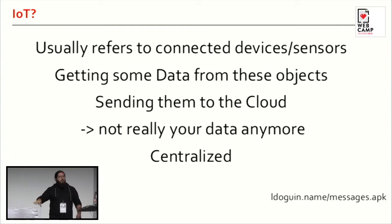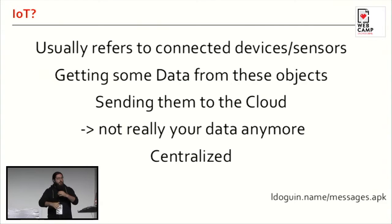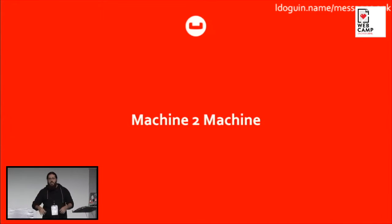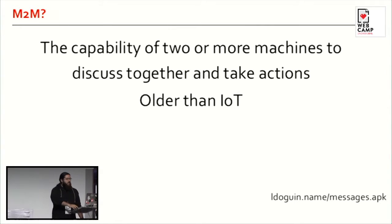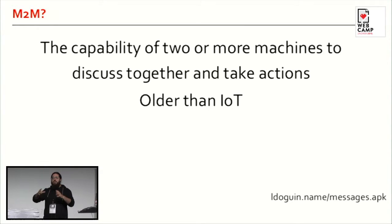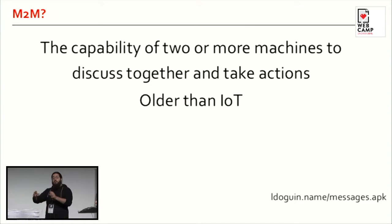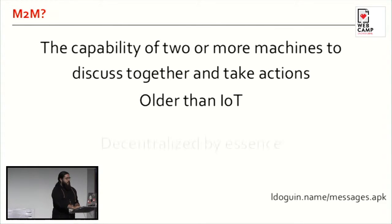Basically, what we call the Internet of Things now — all these things on the Internet — are connected to a central server. That's mostly how it is now. There are new things coming up from Nest and vaguely decentralized objects, and this part is called machine-to-machine, or M2M. Devices talk to each other without using a central server — basically without the Internet. That's great because it's fully decentralized and gives you control over your data, which is extremely important from a privacy perspective.